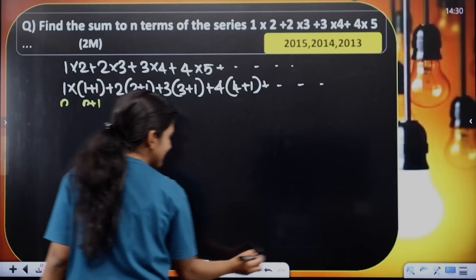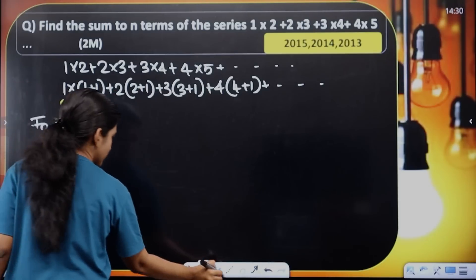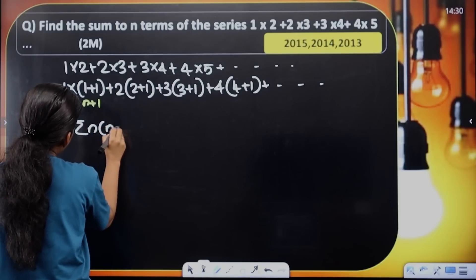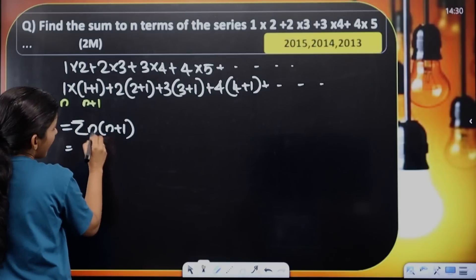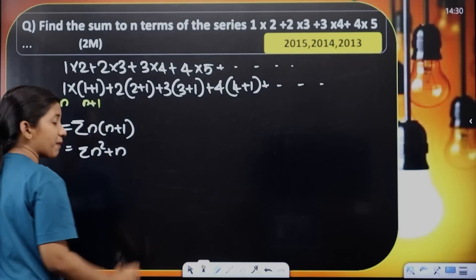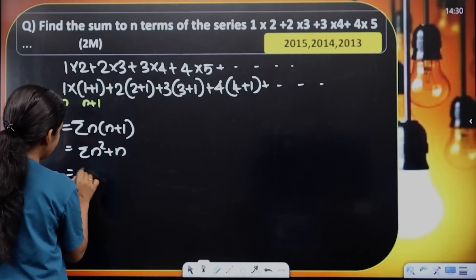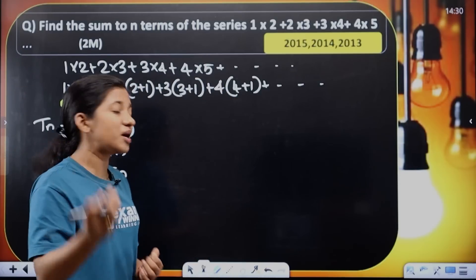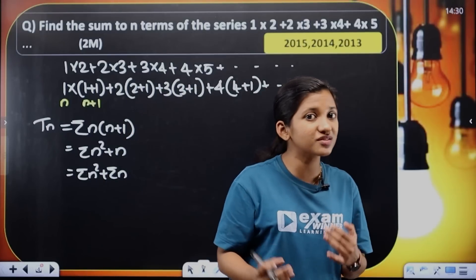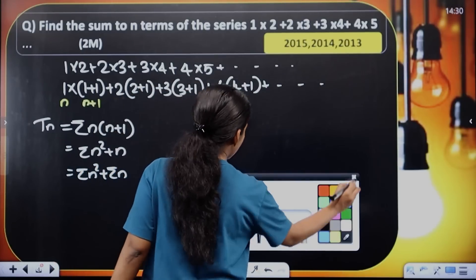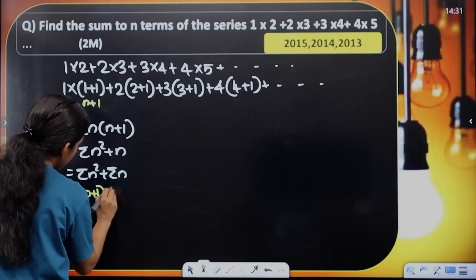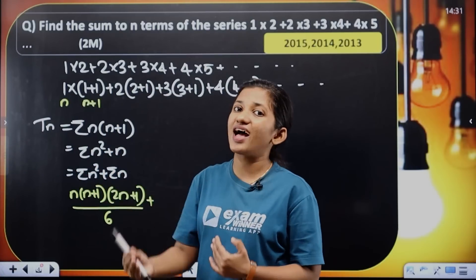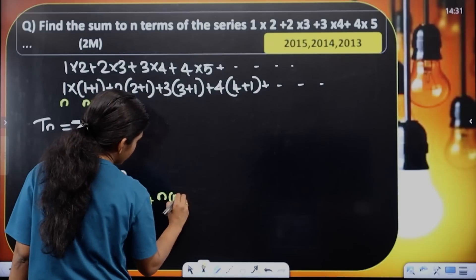So tn equals n into (n plus 1), which equals n squared plus n. Taking the summation: sigma of (n squared plus n) equals sigma n squared plus sigma n. Sigma n squared, the sum of squares of first n natural numbers, equals n(n+1)(2n+1) divided by 6.